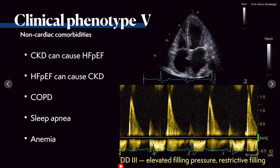With clinical phenotype 5 and non-cardiac comorbidities, I want to discuss some more disease entities. For example, chronic kidney disease. When the kidneys are failing, they cause a volume problem and also a problem of the left ventricle, and can cause heart failure with preserved ejection fraction. On the other hand, when we have HFpEF with elevated filling pressures, that can itself cause chronic kidney disease.